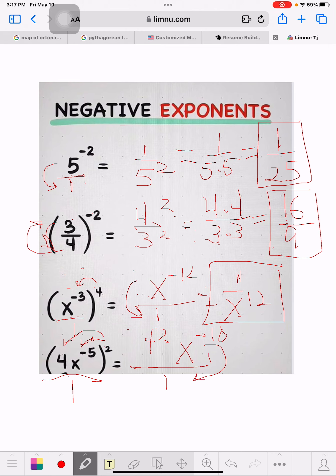So it would be equals 4 to the second power over x to the 10th power. That equals, what's 4 to the second power? It's 16. So it's 16 over x to the 10th power. And that's it. Let's square this off so the teacher knows that's my answer.